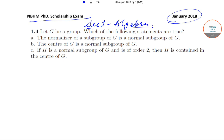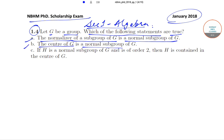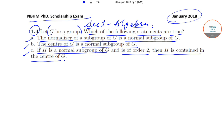The question is: if G is a group, which of the following statements are true? Option A: the normalizer of a subgroup of G is a normal subgroup of G. Option B: the center of G is a normal subgroup of G. Option C: if H is a normal subgroup of G and is of order 2, then H is contained in the center of G.